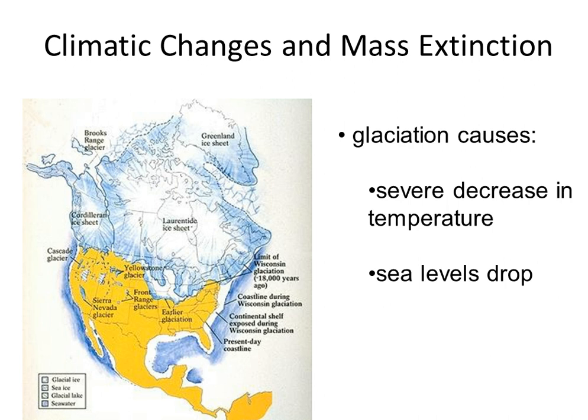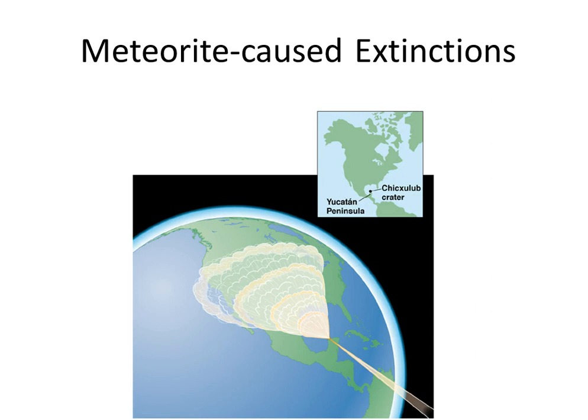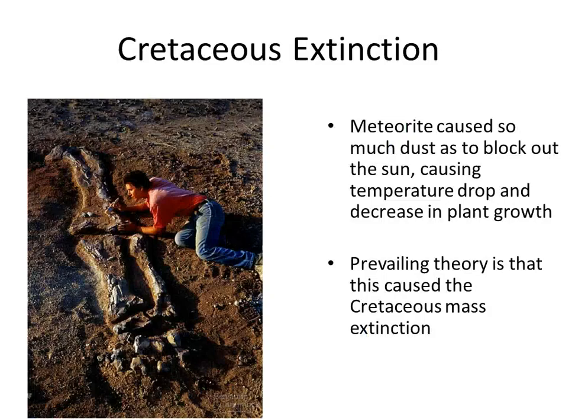Glaciation causes severe decrease in temperature and sea level drop. Meteorite-caused extinction — this shows you the Yucatan Peninsula and where we believe today that the meteorite hit and the impacts of it.